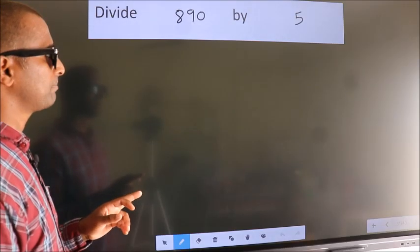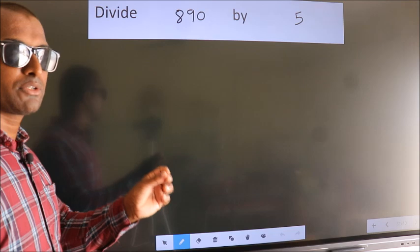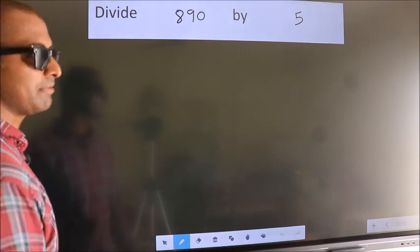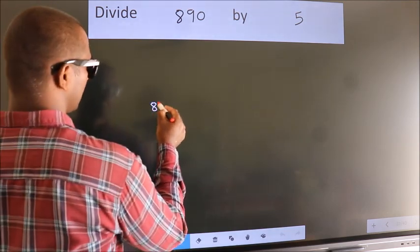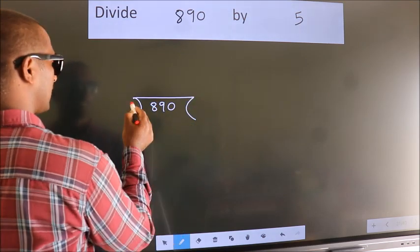Divide 890 by 5. To do this division, we should frame it in this way. 890 here, 5 here.